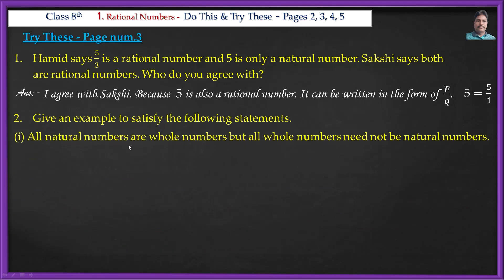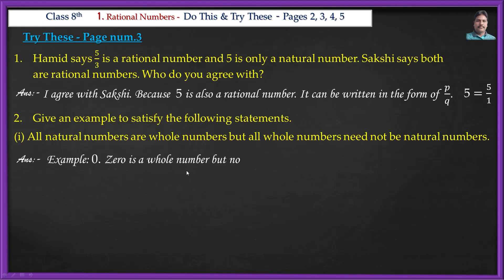Give an example to satisfy the following statement: All natural numbers are whole numbers, but all whole numbers need not be natural numbers. Zero is a whole number but not a natural number — that is the example.